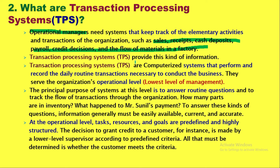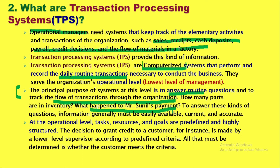TPS — transaction processing system — provides all such information which works at the elementary level, operational level, or lowest level in the organization. Transaction processing systems are computerized systems to automate all the business-related work of daily routine transactions at the operational level. Its principal purpose is to answer the routine queries of customers and track how transactions flow within the organization. For example, if Mr. Sunil needs to check a payment from ABC company, the TPS can answer this with a single click.